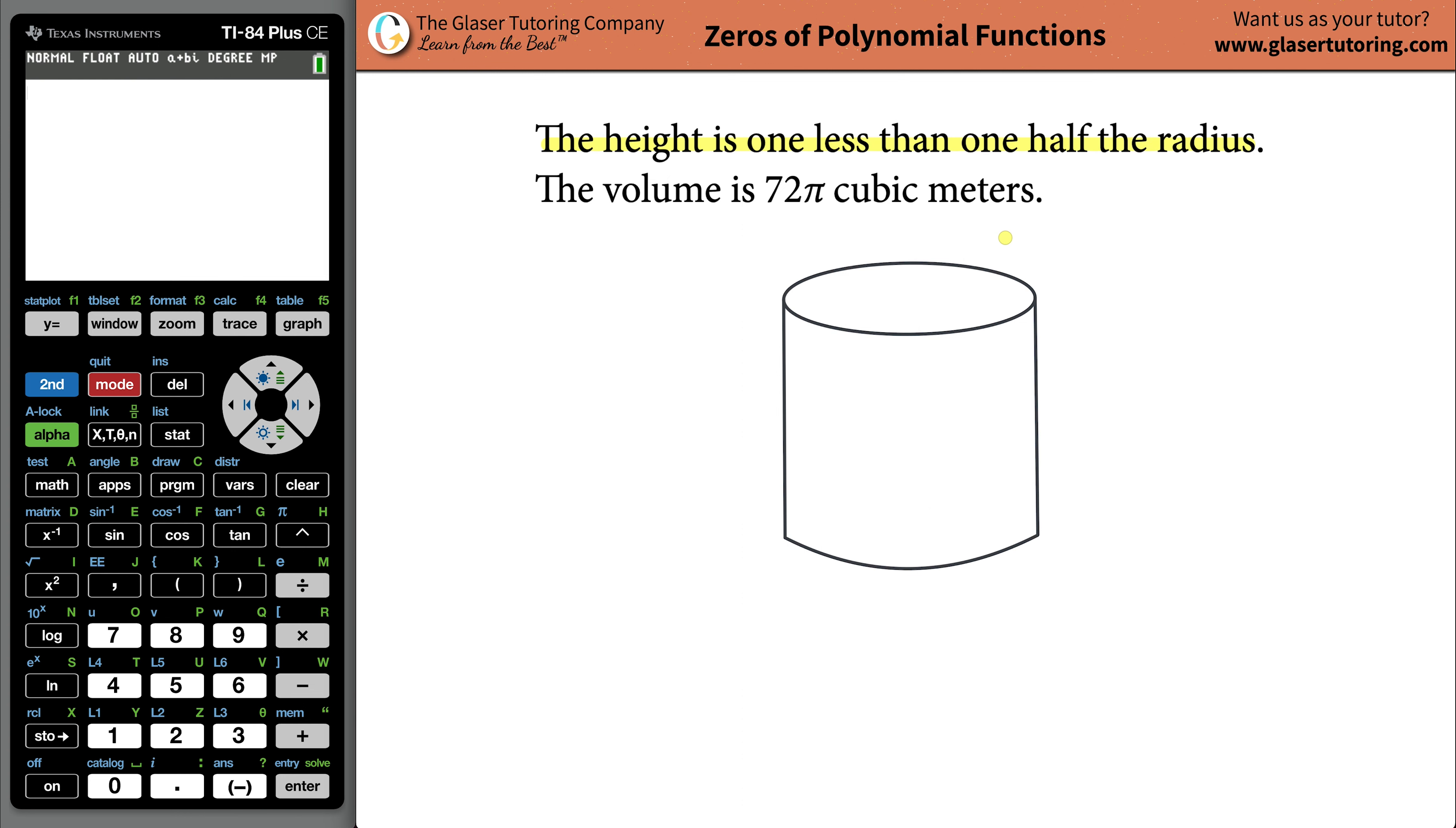What does that mean? I'm going to have to read that like four times over. I just read it for the first time now, and I'm like, oh wait a minute. Right. I'll come back. And the volume is going to be 72π cubic meters.